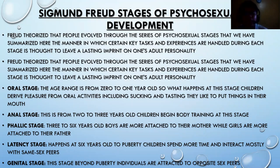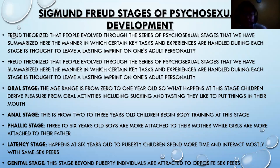The first stage is the oral stage, from zero to one year old, where children are driven by oral activities including sucking and tasting — they like to put things in their mouths. The second is the anal stage, from two to three years old, where children begin body training. The third is the phallic stage, from three to six years old, where boys are more attached to their mothers and girls to their fathers. The latency stage occurs from six years old to puberty, where children interact mostly with same-sex peers. Finally, the genital stage occurs beyond puberty, where individuals are attracted to opposite-sex peers.